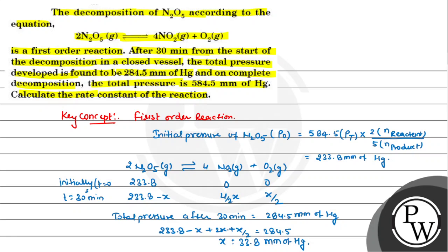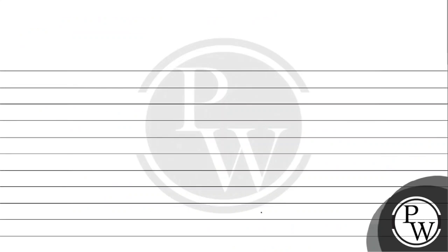So the value of x is obtained. Now, pressure of N2O5 after 30 minutes, which is 233.8 minus 33.8, comes out to be 200 mm of Hg.